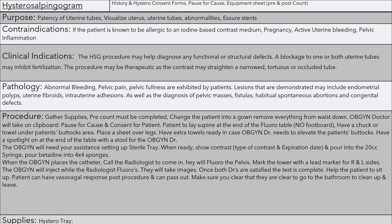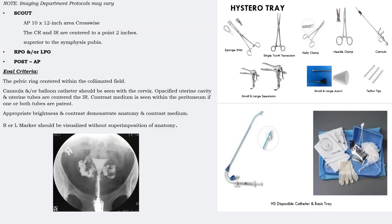Some discharge instructions: patients may have some spotting; have a pad and some washcloths and wipes for them to clean up before leaving. Here are images of some of the supplies you may need, labeled, as well as an image of a good example of the HSG and instructions for the eval criteria.